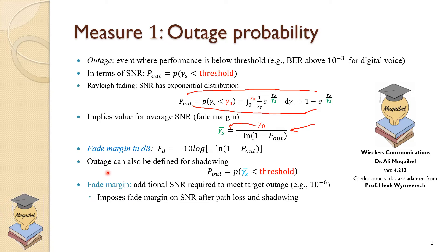The outage can also be defined in terms of shadowing. Whether we look at gamma-S, gamma-bar, or gamma-double-bar, the requirement will define what we look for. This imposes a fade margin on the signal-to-noise ratio after path loss and shadowing. You can use the fading expression directly, or define it over shadowing to get the corresponding expression.